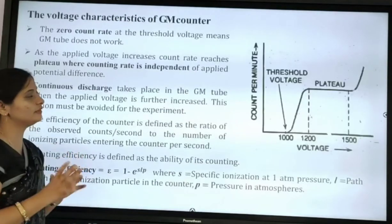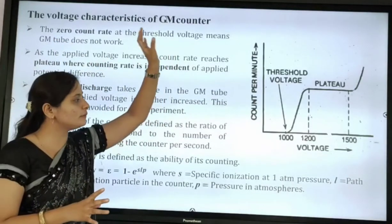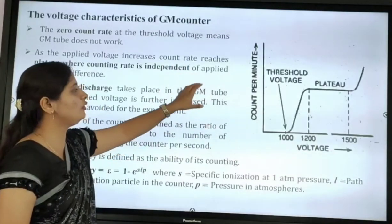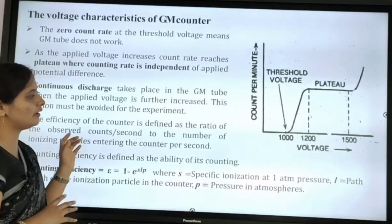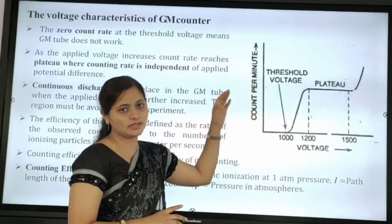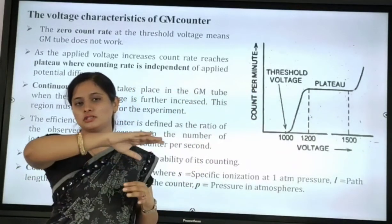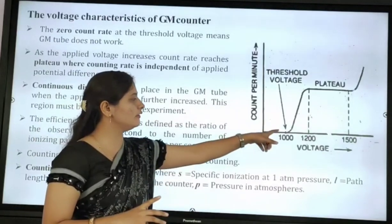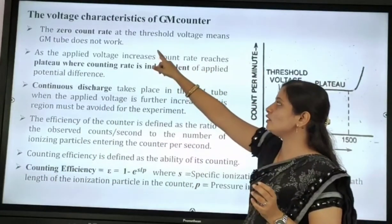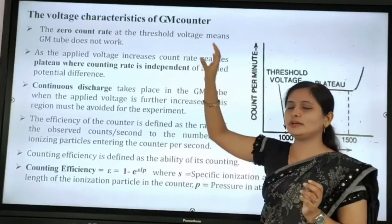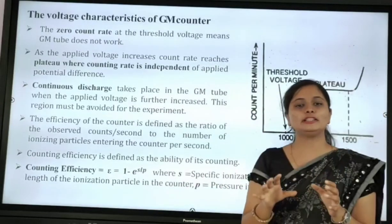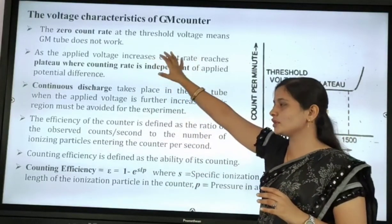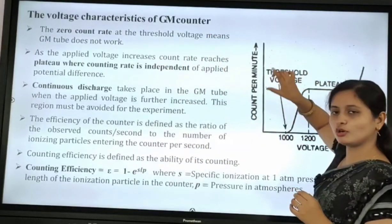Next, the voltage characteristics of the GM counter are obtained by plotting a graph with voltage on the x-axis and count per minute on the y-axis. First is the threshold voltage, where the count rate is zero and the GM tube does not work — it is at rest. As the applied voltage increases, the count rate increases until it reaches the plateau region.